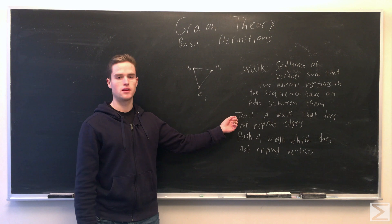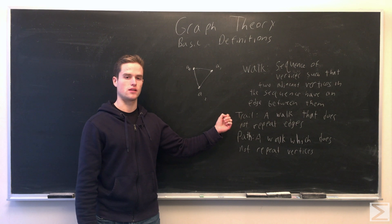If we have a trail in which the beginning and end vertices are the same, it's called a circuit.